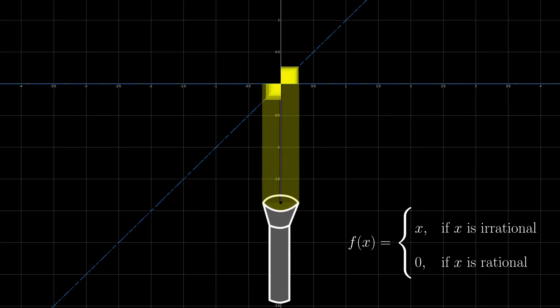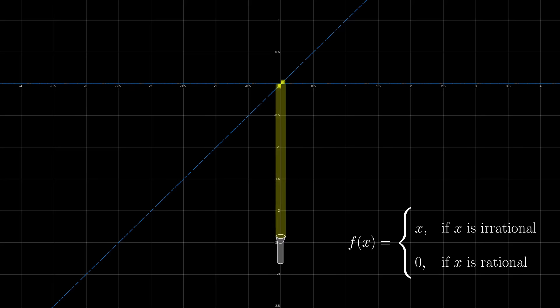By the way, you can even get the same effect with functions that are completely discontinuous, like this one, which is equal to x when x is irrational, and 0 when x is rational. Because the beam tightens as we approach 0, the limit actually exists.